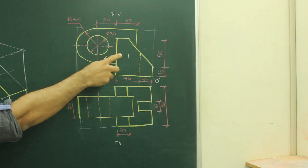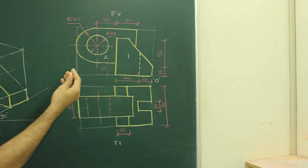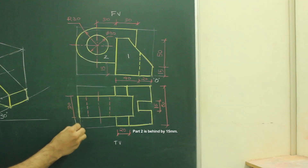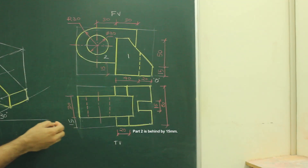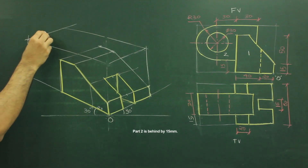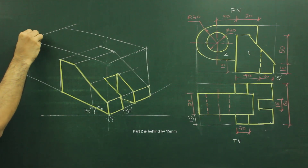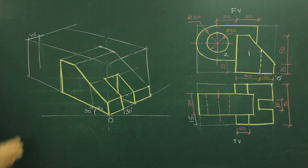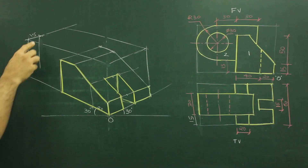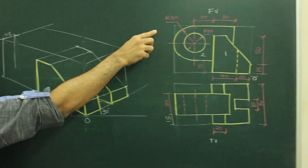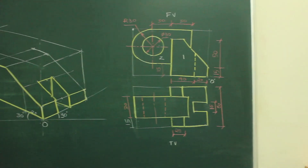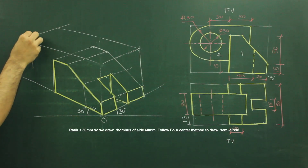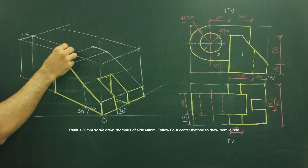There is no visible difference between Part 1 and Part 2 — a dark line indicates Part 2 is behind. To find how far behind, we check the top view: total width is 16, and this part is 30, so Part 2 is 15 behind. From here we go behind by 15 and then start with the block. This point corresponds to the main diagram, and we go down by 60, then draw a rhombus.